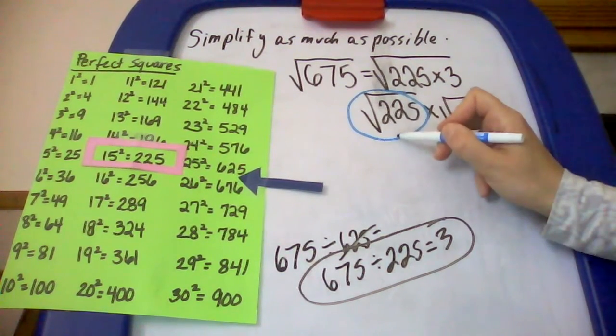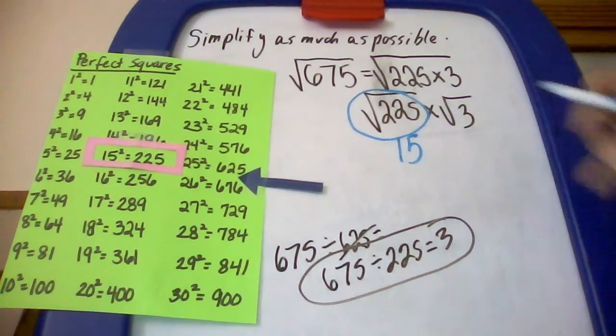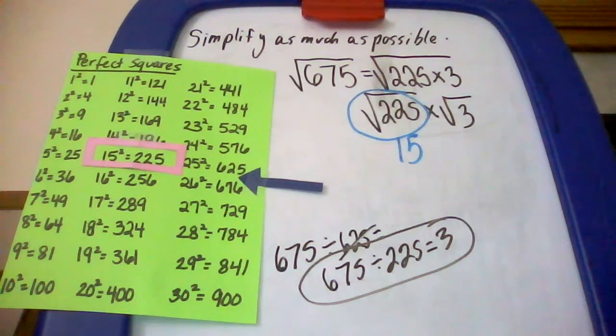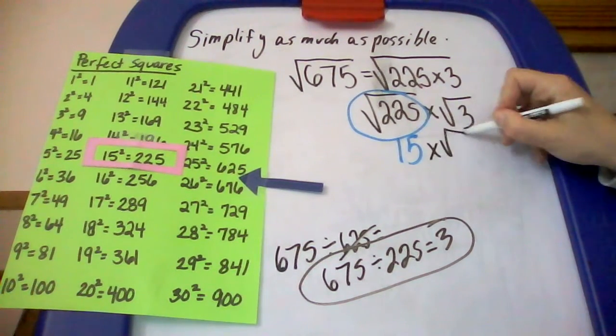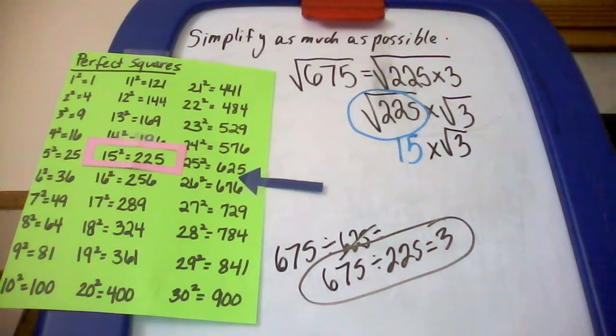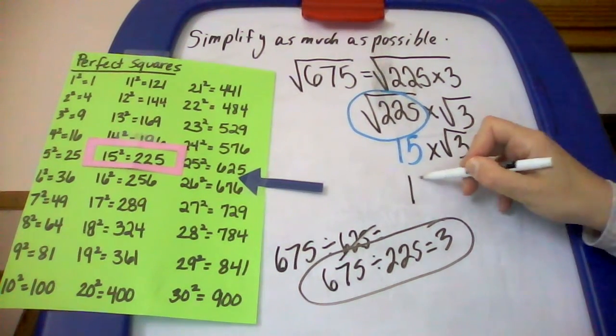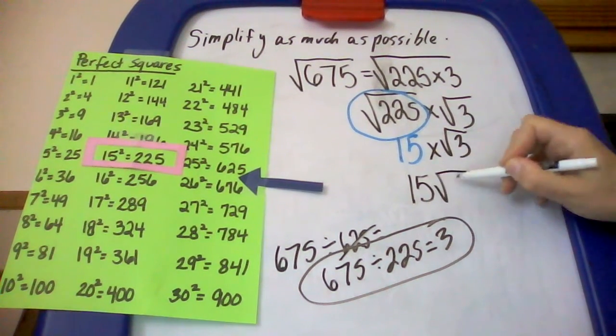I'm going to just bring down my times the square root of 3, and then I'm just going to remove that multiplication symbol, because we don't need to show it. So your answer is 15 square root of 3.